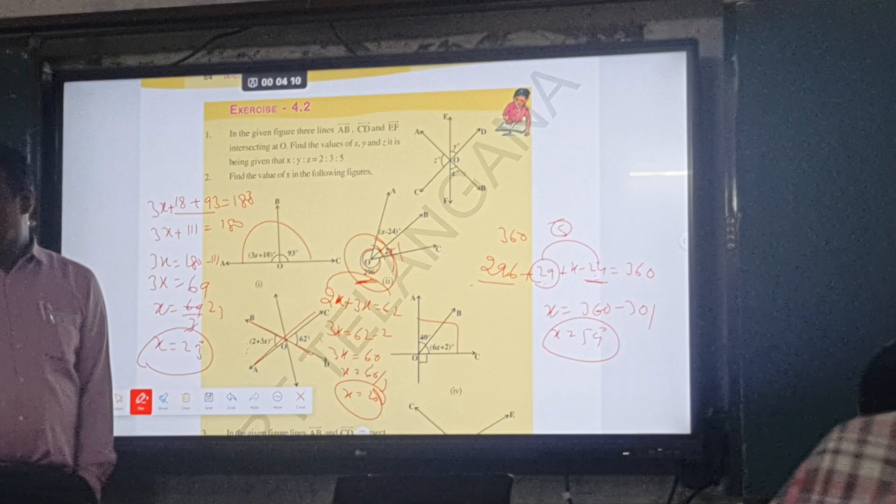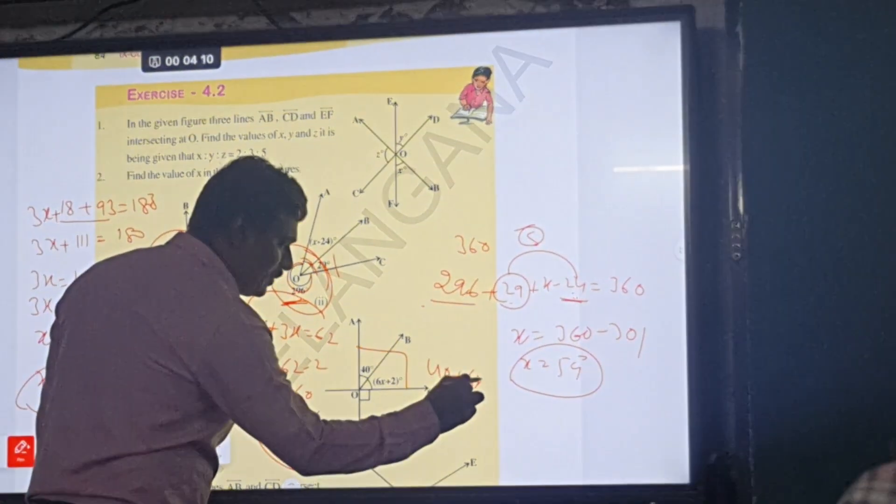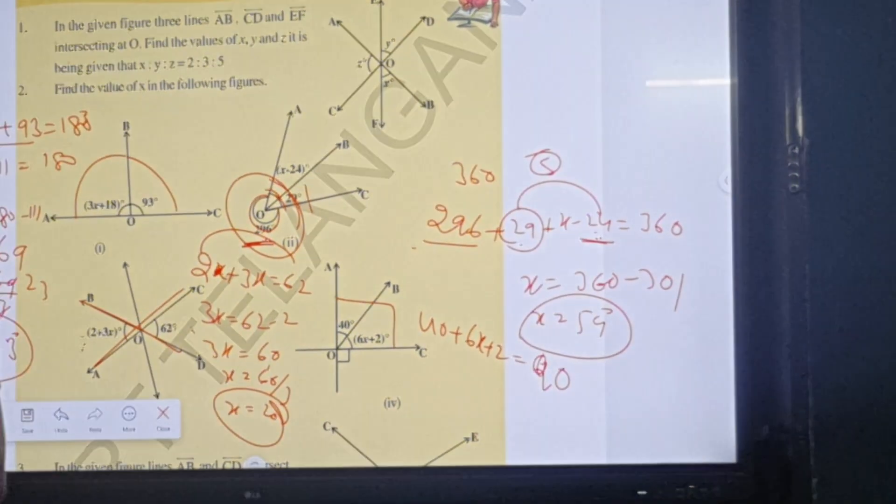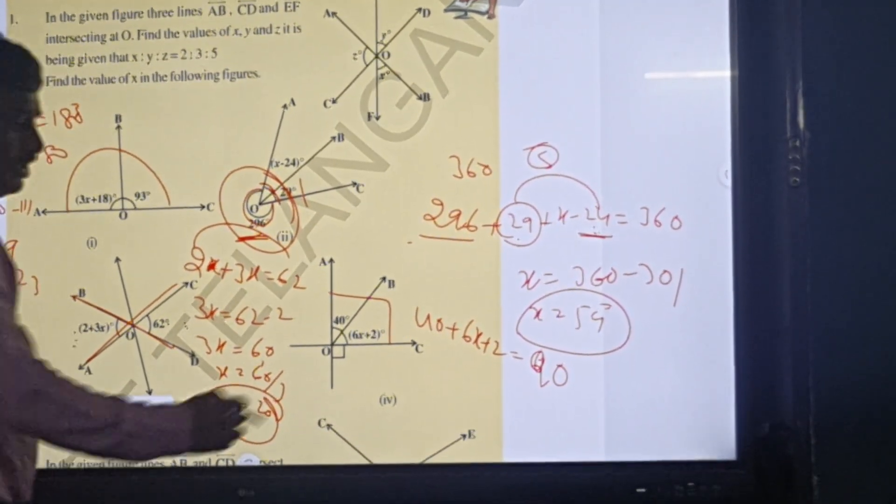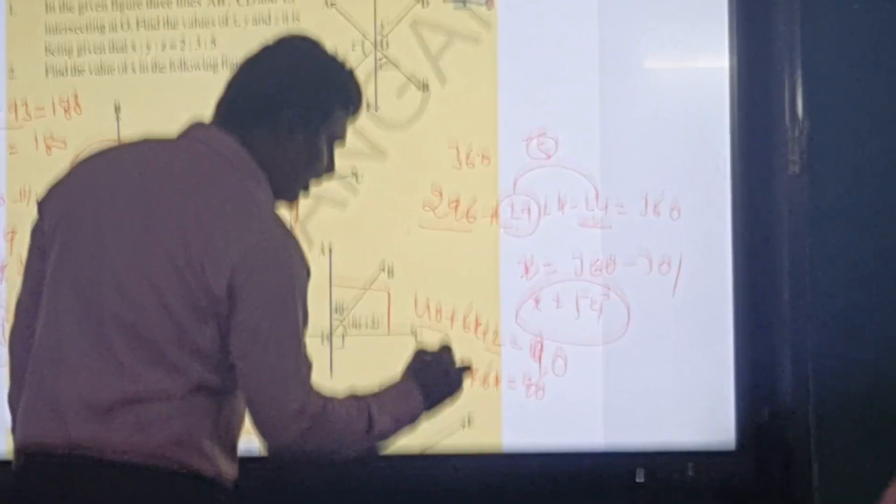Very high. Right hand? 40 plus 6x plus 2, like 90? 42 plus 6x equals 90.